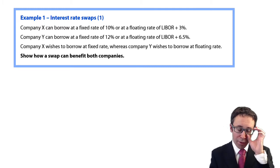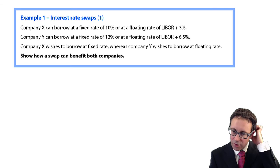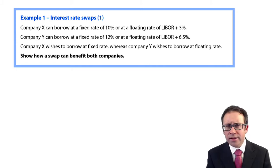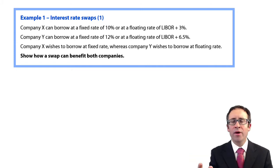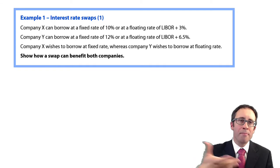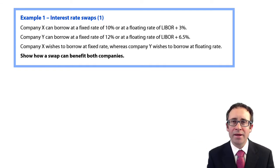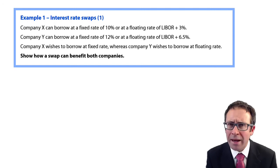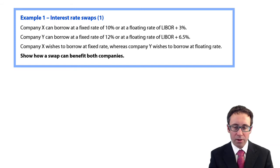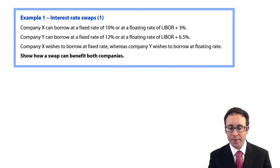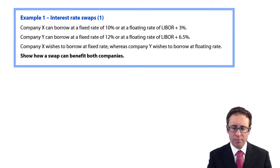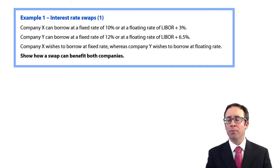So we've got the example — Interest Rate Swaps 1. We want to demonstrate how a swap can benefit both companies. Company X can borrow at a fixed rate of 10% or a floating rate of LIBOR plus 3%. LIBOR stands for London Interbank Offered Rate — think of it as a variable rate of interest that is the average of all the borrowing rates charged between banks in London on a day-to-day basis, essentially the base rate of interest. Company Y doesn't look to have as good a credit rating, because it can borrow at a fixed rate of 12% or a floating rate of LIBOR plus 6.5%.